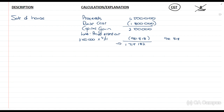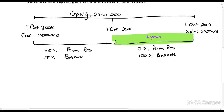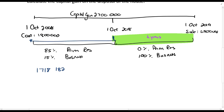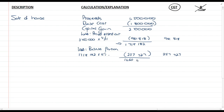So the 1,718,182 is now the capital gain for the period 1 October 2008 to 1 October 2015. We know that 15% of that capital gain relates to the business portion and must also be taxed. Less business portion: 1,718,182 times 15% equals 257,727 rands. That amount immediately goes into my CGT column — I will have to pay CGT on it. We are left with 1,460,455 rands, which is the capital gain on the primary residence.